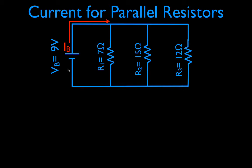The current of the battery stays the same until we get to this node, this junction right here, and then the current splits. Some of the current goes through R1, or what we call branch one, and we call that I1. The remaining current continues on until it gets to the next branch and splits again — some goes through I2, and the remainder goes through resistor number three, which we call I3.